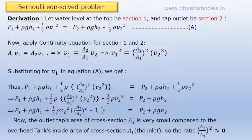So, v1 which is the velocity of water at the top of the tank is equal to A2 by A1 into v2. And because Bernoulli's equation has a v1 squared term, we square v1. So, we get v1 squared as (A2/A1)² into v2 squared.